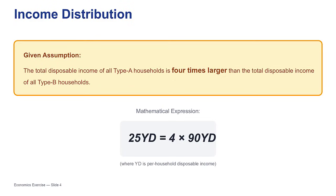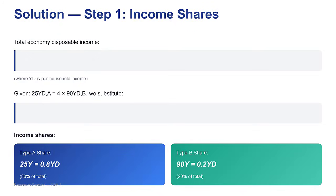The first step in combining them is to scale them up — to see what each group's total autonomous spending contribution is. If each of the 25 Type A households spends a baseline of 20, you multiply: 25 times 20 gives us 500. For the 90 households in Type B, 90 times 10 is 900. Adding those together — 500 from Type A plus 900 from Type B — the total autonomous consumption for this entire economy is 1,400. That's the amount of spending that happens no matter what total income is.